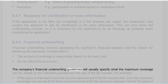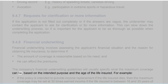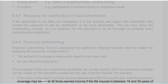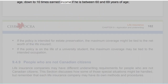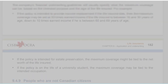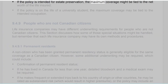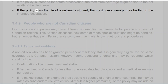The company's financial underwriting guidelines will usually specify the maximum coverage based on the intended purpose and age of the life insured. For example, if the policy is intended to provide income replacement if the life insured dies, then the maximum coverage may be set at 30 times earned income if the life insured is between 16 and 30 years of age, down to 10 times earned income if he is between 60 and 69 years of age. If the policy is intended for estate preservation, the maximum coverage might be tied to the net worth of the life insured. If the policy is on the life of a university student, the maximum coverage may be tied to the intended occupation.